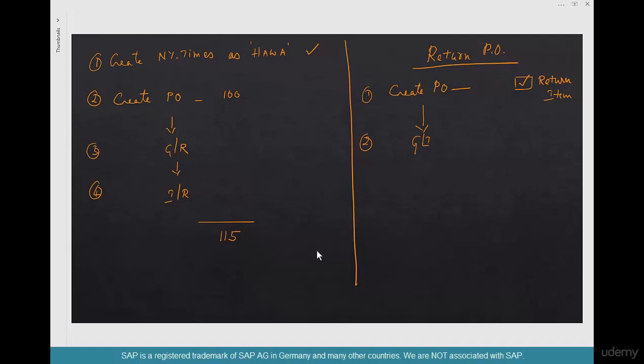Step three is creating an invoice receipt as a Credit Memo. So that's the Return PO process. In the next chapter we are going to talk about credits and debits.